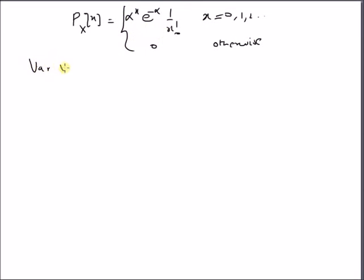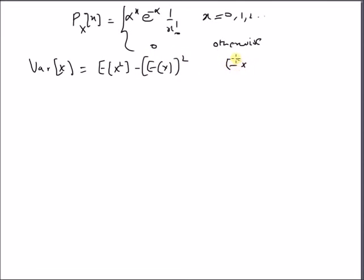Our goal is to find the variance of X, which is defined as the expectation of X squared minus the square of the expectation. From a previous video, we know that the mean of the Poisson random variable is equal to the parameter alpha.